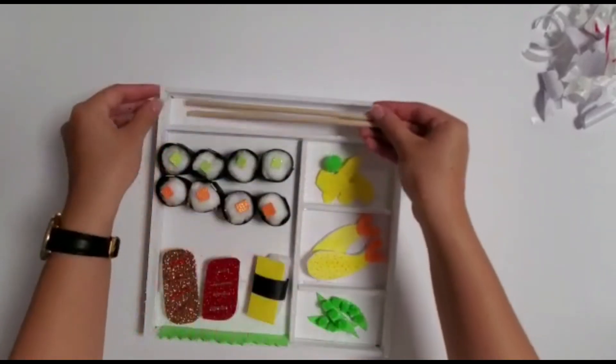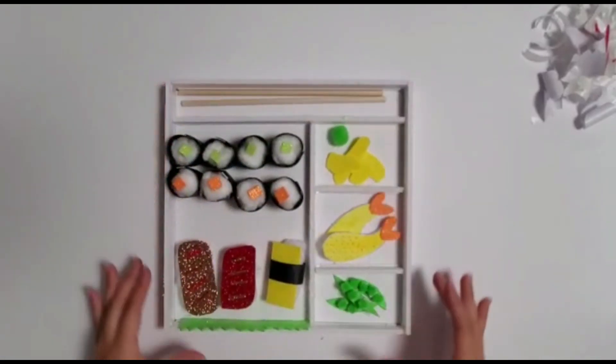Last but not least, place the two dowels, your chopsticks, into the long section of the bento box.